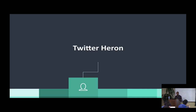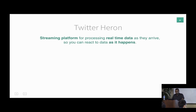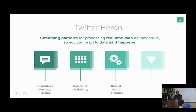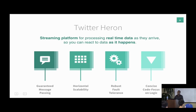Before going into autopiloting details, I want to give an introduction to Heron. Twitter Heron is a streaming platform for processing real-time data as it arrives, so you can react to data as it happens. It provides guaranteed message passing with three semantics: at-most-once (best-effort), at-least-once (guaranteed processing but possibly more than once), and exactly-once (processed only once). The latter also has consistency implications.